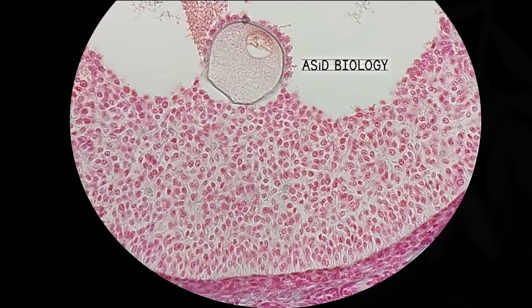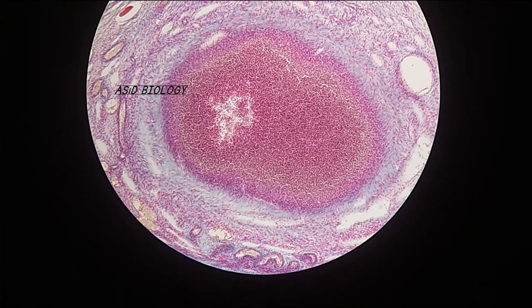If we zoom into the secondary follicle, we can see the secondary oocyte. This secondary oocyte will be released during ovulation. After ovulation, the remaining tissue will be transformed into corpus luteum. Corpus luteum is also able to secrete hormones inside the ovary.